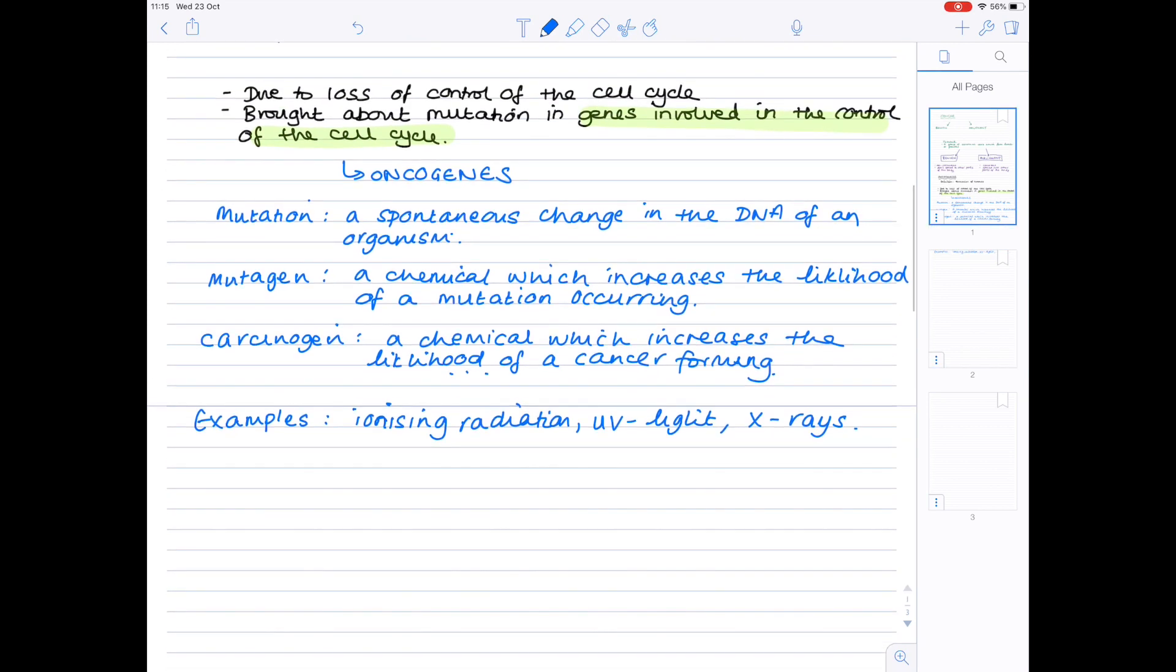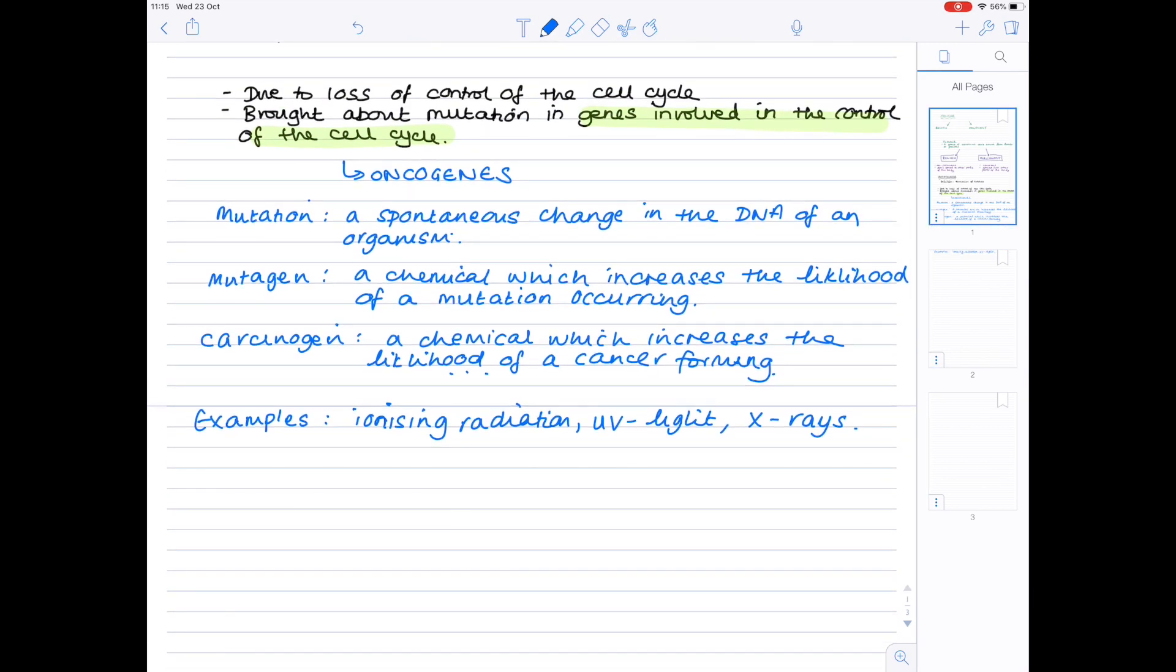We can see that what's happening with cancer is that certain chemicals such as X-rays and ionizing radiation may lead to mutation—a spontaneous change in DNA—which can cause a mutation in the genes which control the cell cycle, so oncogenes, which lead to uncontrolled cell cycle and therefore uncontrolled cell division. It's a process which all builds on top of each other.